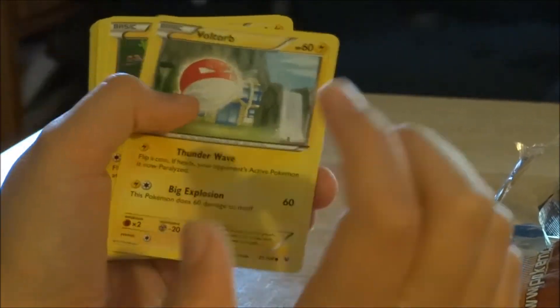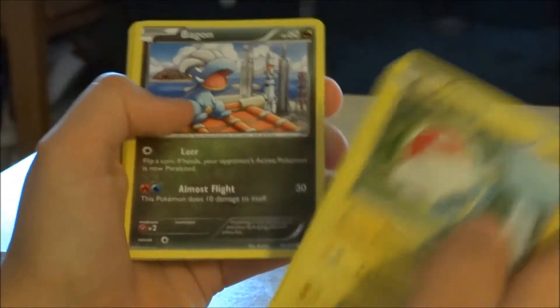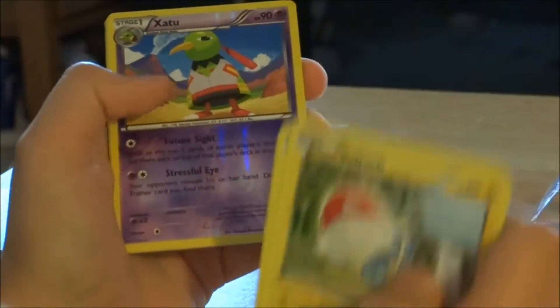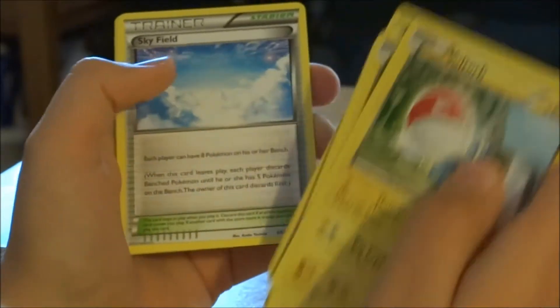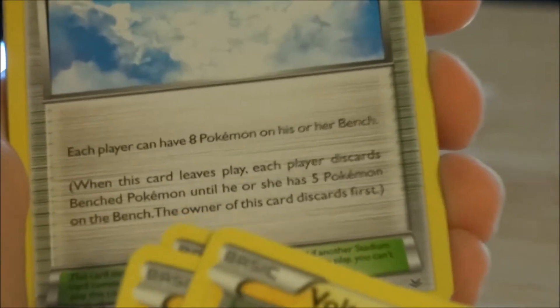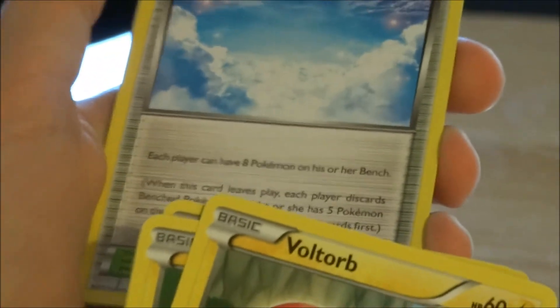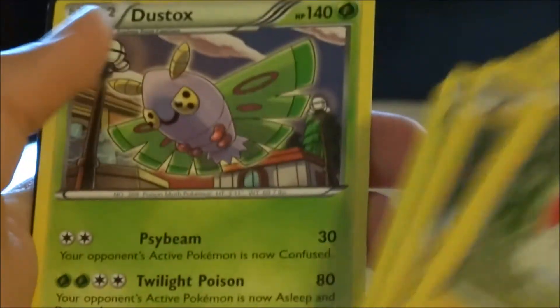Voltorb, Pikachu, Wurmple, Relicanth, Binacle, Reverse Rare Chatot, Vibrava. Skyfield? What's that? Each player can have eight Pokemon on his or her bench. Whoa! Wow, that's crazy. Ninjask, Dustox.